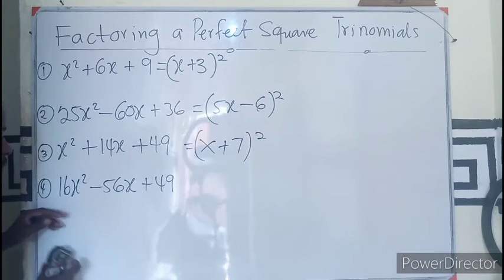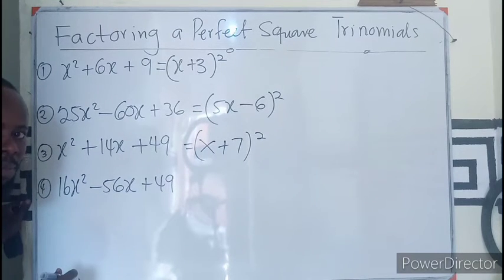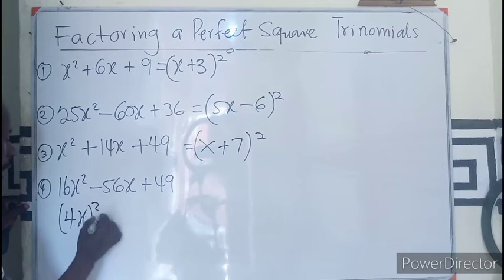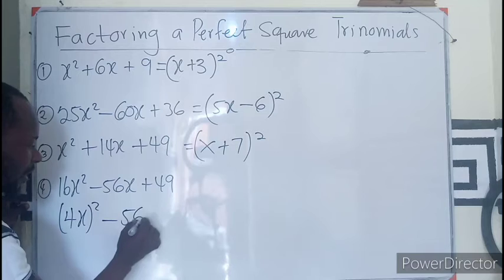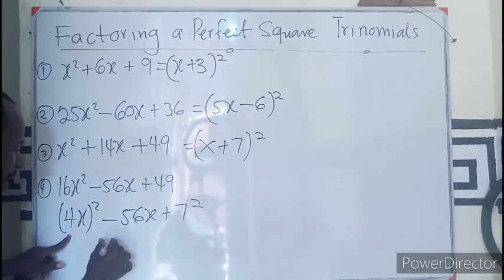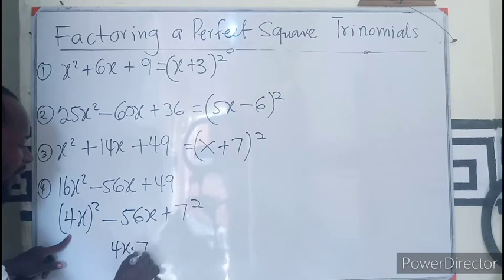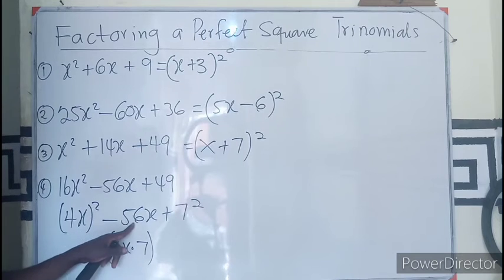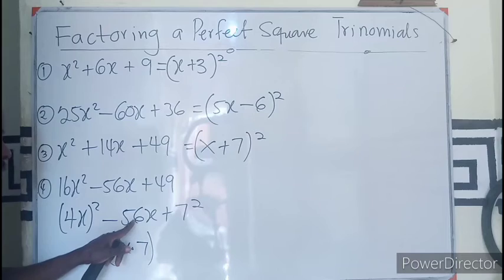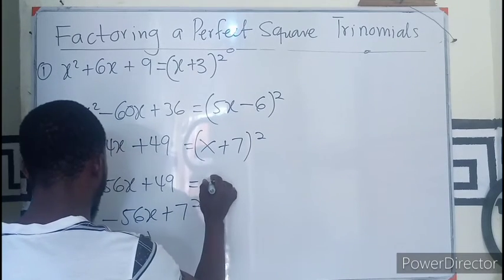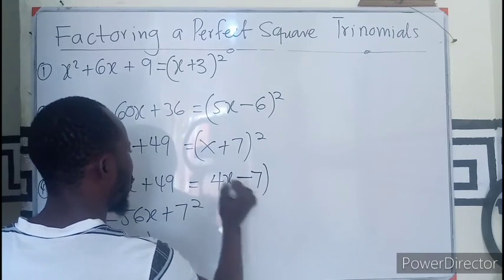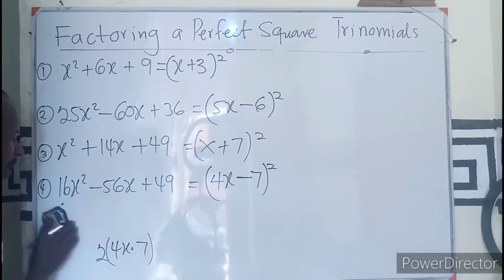Good. I believe this will also be something you can be able to find easily, right? That would be (4x)² - 56x + 7². So now you ask yourself, if you have 4x times 7, twice of that, will it give you 56? I believe that would be 28 times 2 equals 56. So this question is nothing but 4x—the sign here is minus—7, all squared.